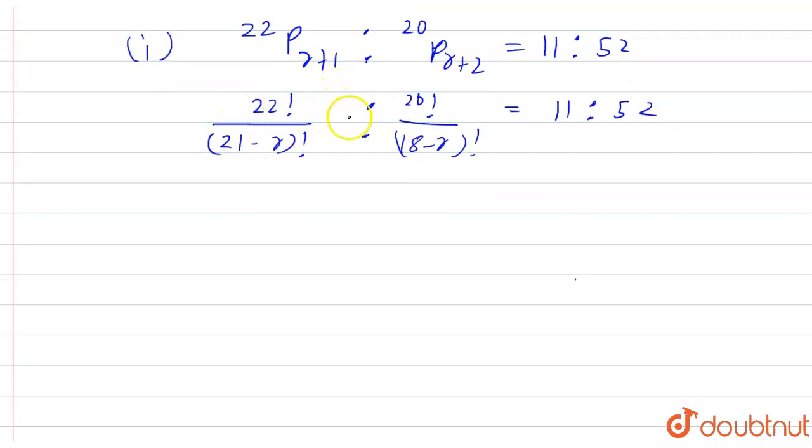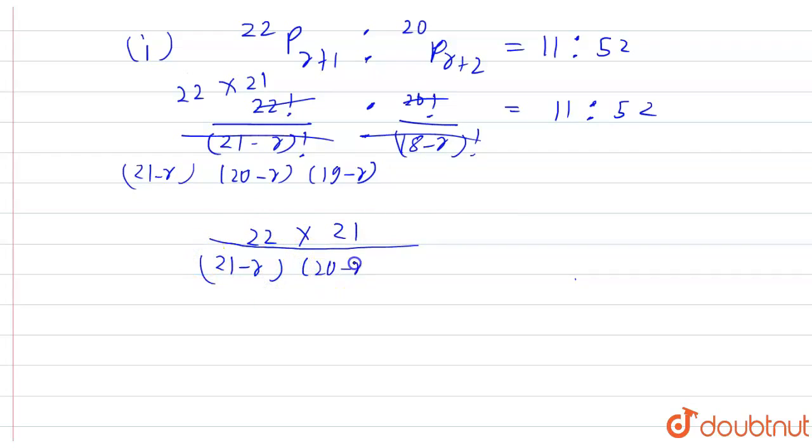Now, on solving and canceling, it will come out to be 22 into 21 because it will be 22 into 21 into 20 factorial and we are canceling out 20 factorial with 20 factorial. When we cancel this, we will get 21 minus R, 20 minus R into 19 minus R. Now, 22 into 21 divided by 21 minus R, 20 minus R, 19 minus R is equal to 11 by 52.